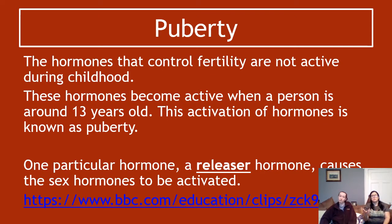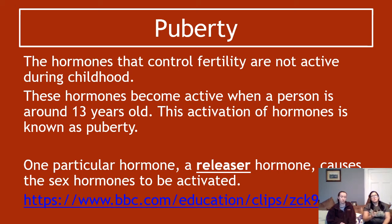Focusing on sex hormones and hormonal control of reproduction: the hormones that control fertility are not active during childhood. Childhood is a distinct stage of life during which reproductive function should not be switched on. These hormones become active when a person is around 13 years old, though this is different for everybody. The activation of these hormones is known as puberty, and it causes all sorts of changes in a person's body so that they are ultimately able to sexually reproduce. The particular hormone you need to know is called the releaser hormone, which causes the sex hormones to be activated.